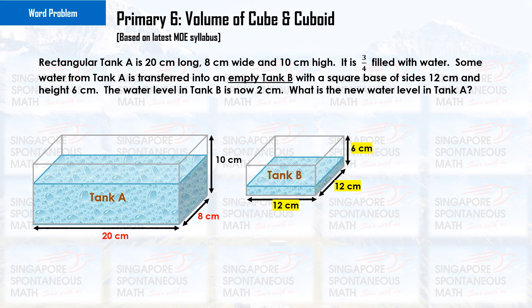Rectangular tank A is 20 cm long, 8 cm wide, and 10 cm high. It is three-quarter filled with water. Some water from tank A is transferred into an empty tank B with a square base of sides 12 cm and height 6 cm. The water level in tank B is now 2 cm. What is the new water level in tank A?